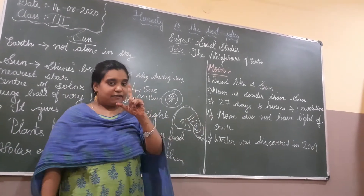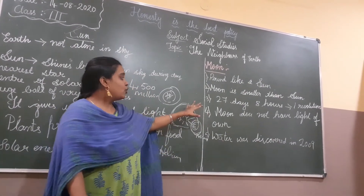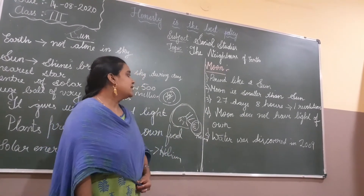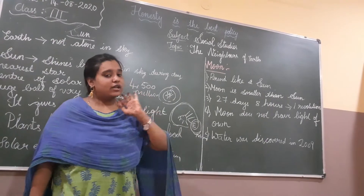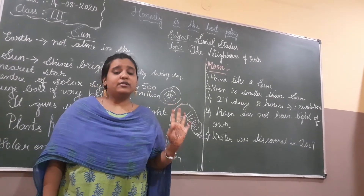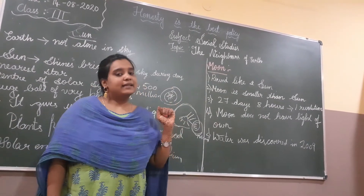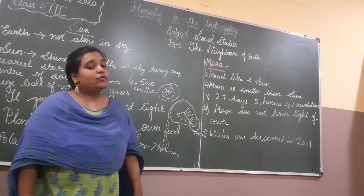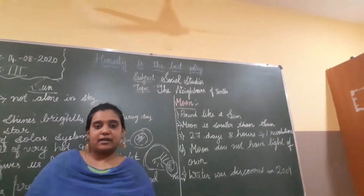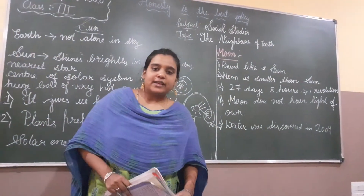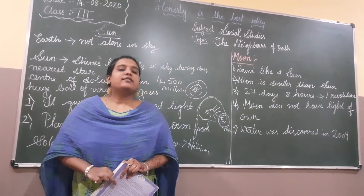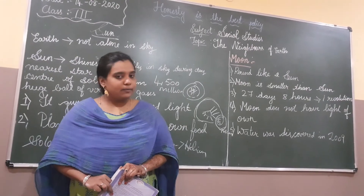One revolution of the moon takes 27 days and 8 hours. The moon doesn't have light of its own — it borrows its light from the sun. Water was discovered in September 2009, but due to lack of air on the moon, there is no life possible there.